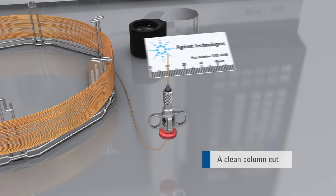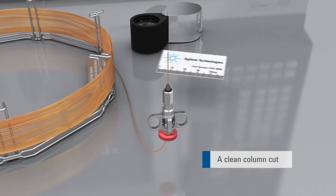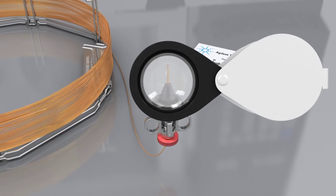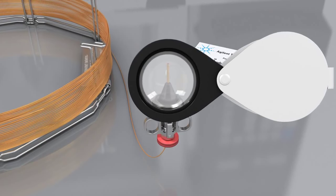Carefully trim the end of the column using a column cutter. Ensure the column cut is at a right angle to the tubing wall and that the end is free of chips, burrs or uneven areas.